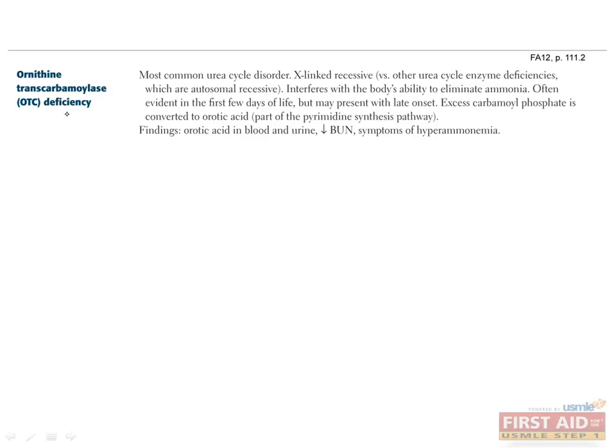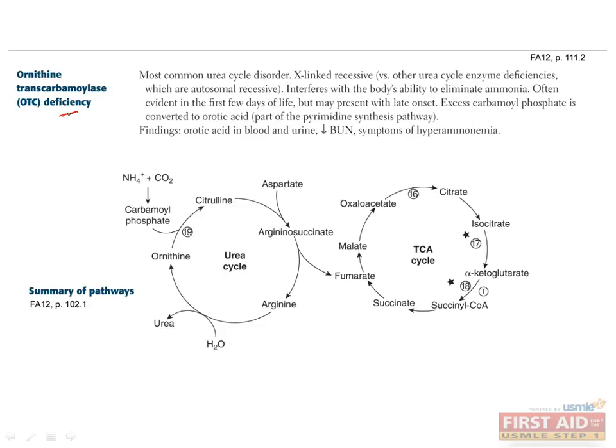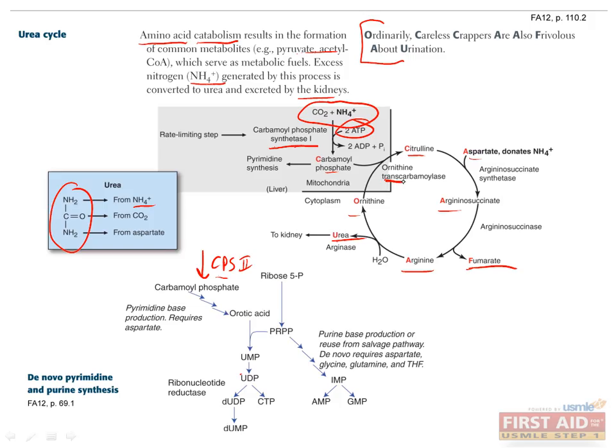Speaking of hereditary urea cycle enzyme deficiencies, ornithine transcarbamylase deficiency is the most common urea cycle disorder. A lot of enzyme deficiencies I've mentioned are autosomal recessive, but this one is actually X-linked recessive. Remember, ornithine transcarbamylase is used to convert ornithine to citrulline by adding carbamoyl phosphate. Therefore, if this enzyme is deficient, carbamoyl phosphate builds up.